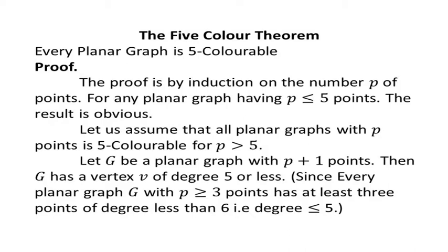Next we look into the famous theorem, that is the five color theorem. The statement of the five color theorem is: every planar graph is five-colorable. A graph is said to be planar if it can be drawn on a plane without intersecting edges. That is, the planar graph should not contain any intersecting edges.